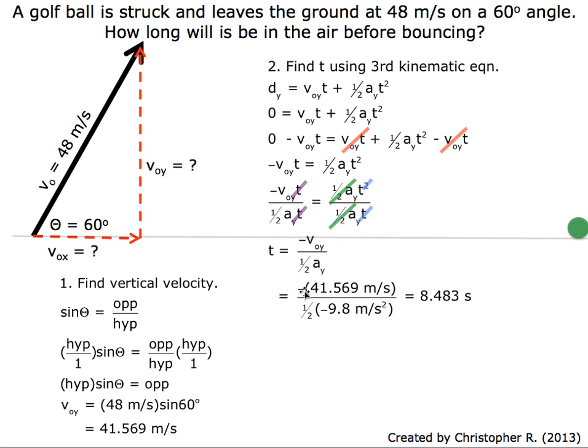We have negative 41.569 meters per second divided by ½ times -9.8 meters per second squared. We plug that into our calculator and we get 8.483 seconds.